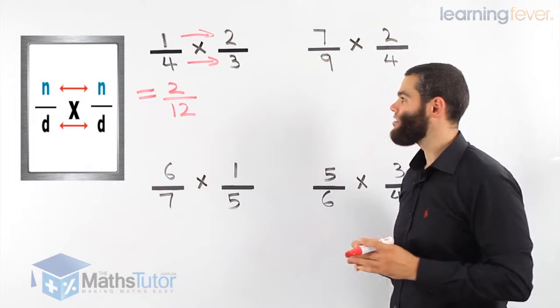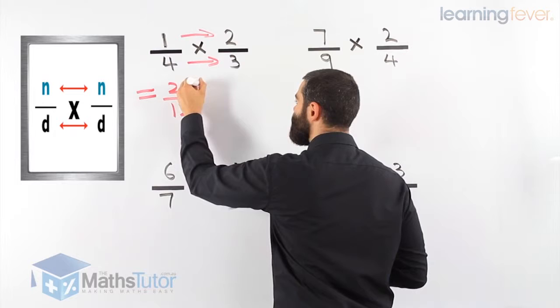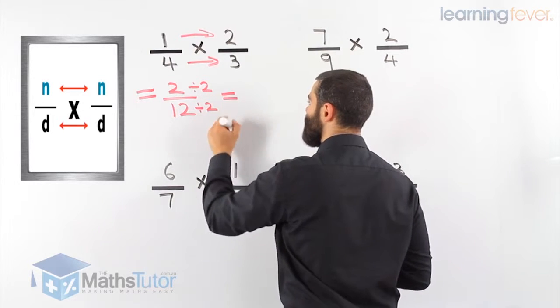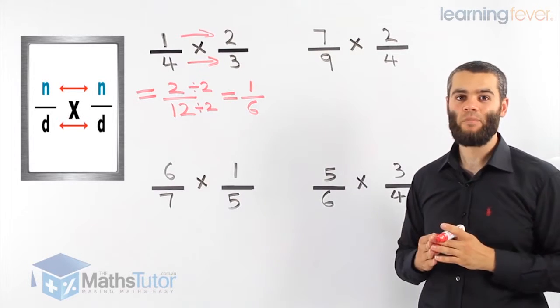Now we ask, can we simplify two over twelve? Yes, they can simplify. Highest common factor is two. Our final answer is one over six. It is that simple.